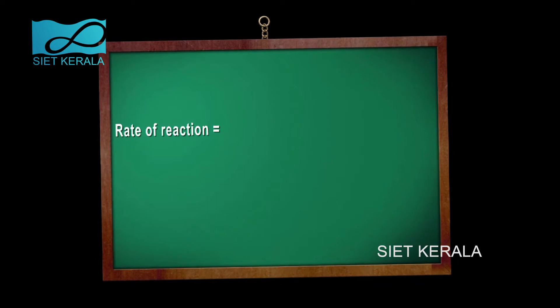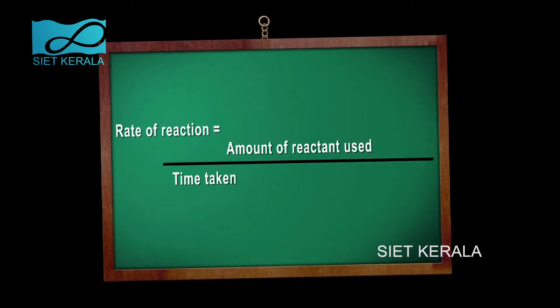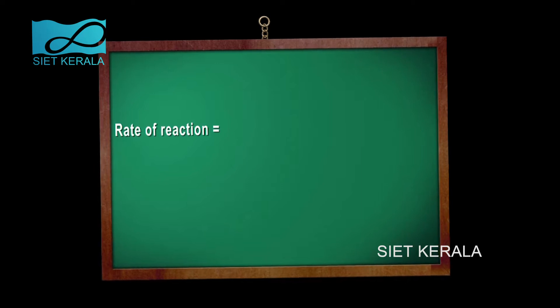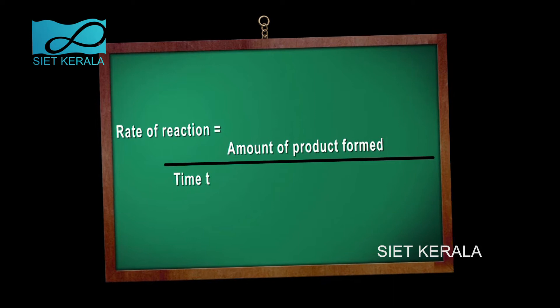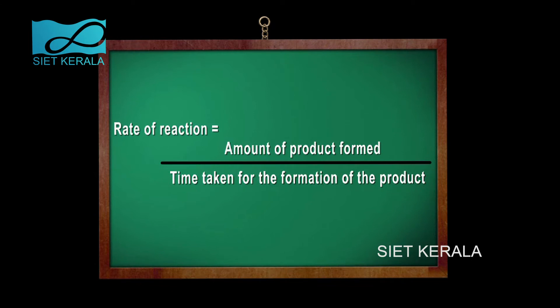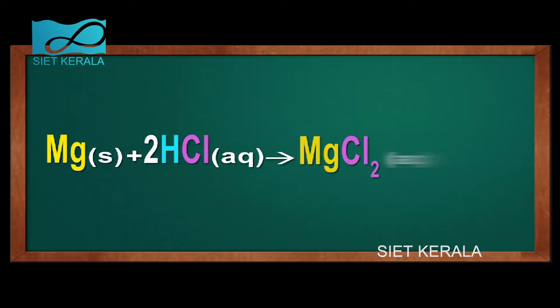How do we calculate the rate of a chemical reaction? It is often expressed in terms of either the concentration of a product that is formed in a unit of time, or the concentration of a reactant that is consumed in a unit of time. When we express a chemical reaction, we have to show the physical nature of reactants and products through their chemical formula: for solid, S; liquid, L; gases, G; and for aqueous solution, AQ.